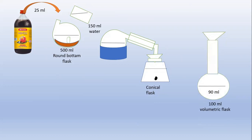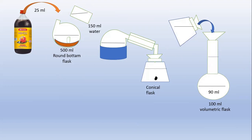That collected alcohol is then transferred into a 100 ml volumetric flask. Transfer a maximum volume up to 90 ml — the volume should not be less than 90 ml. The remainder is diluted with water to make up to the 100 ml volume.